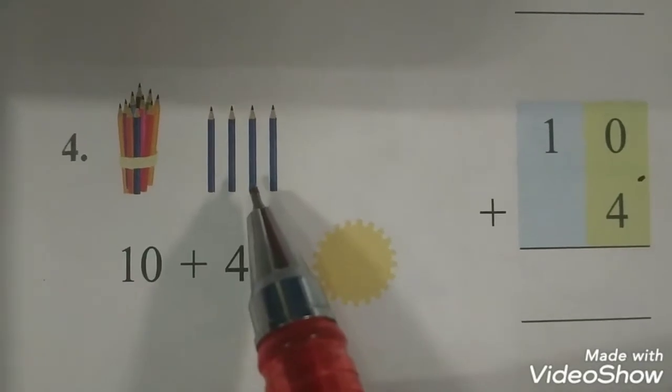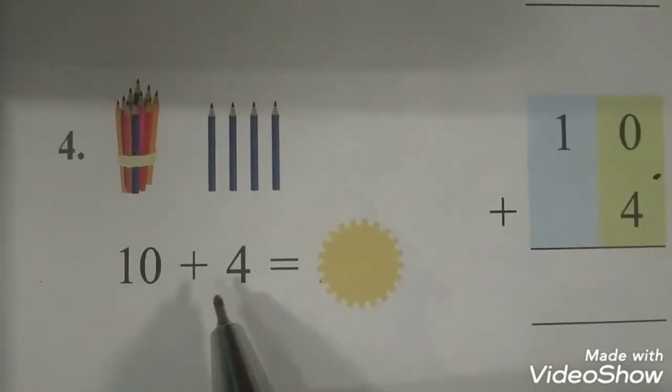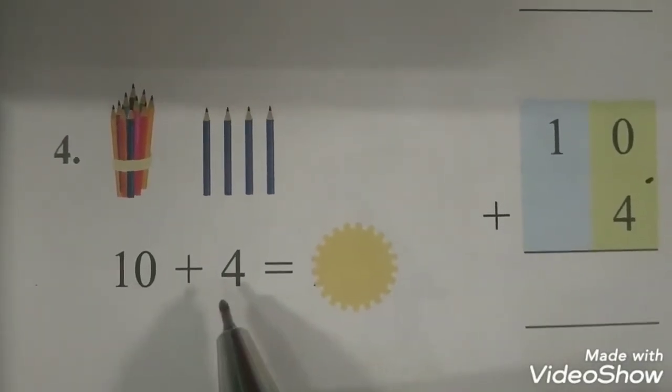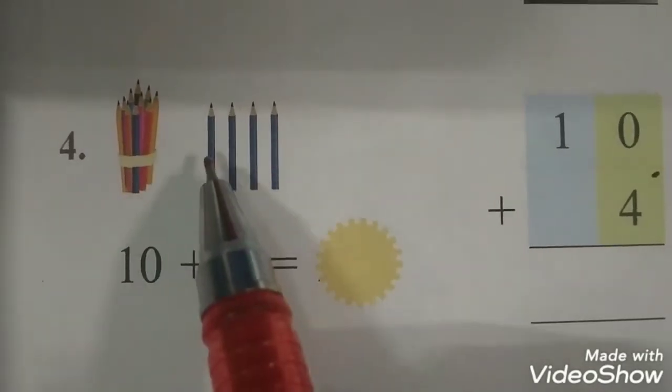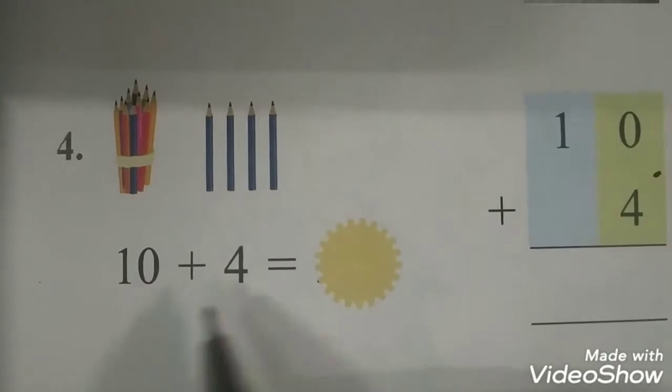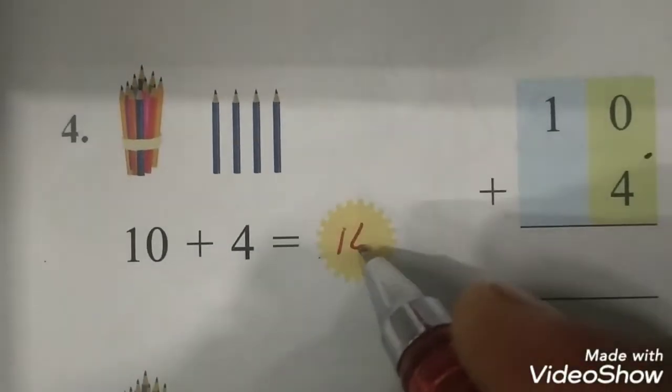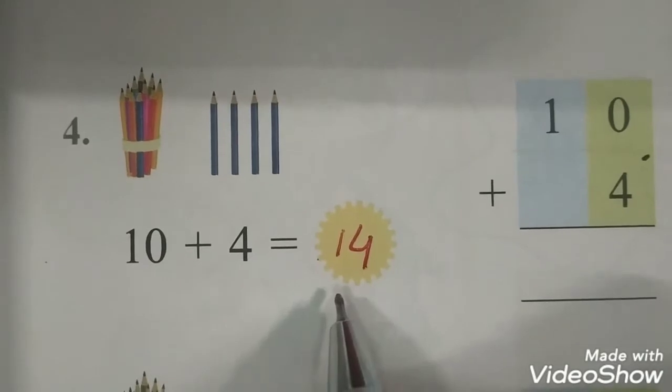10 and this is 4. So 10 plus 4. 10 plus 4 will be? If we count, 10 keep 10 in mind and count forward: 11, 12, 13, 14. 10 plus 4 is 14. This is the answer.